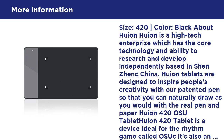Package contents: Huion 420 graphics tablet, USB cord for the tablet, wireless pen with two programmable buttons, one AAA battery (needed for pen), pen nibs x4 with removal tool, and one user manual.